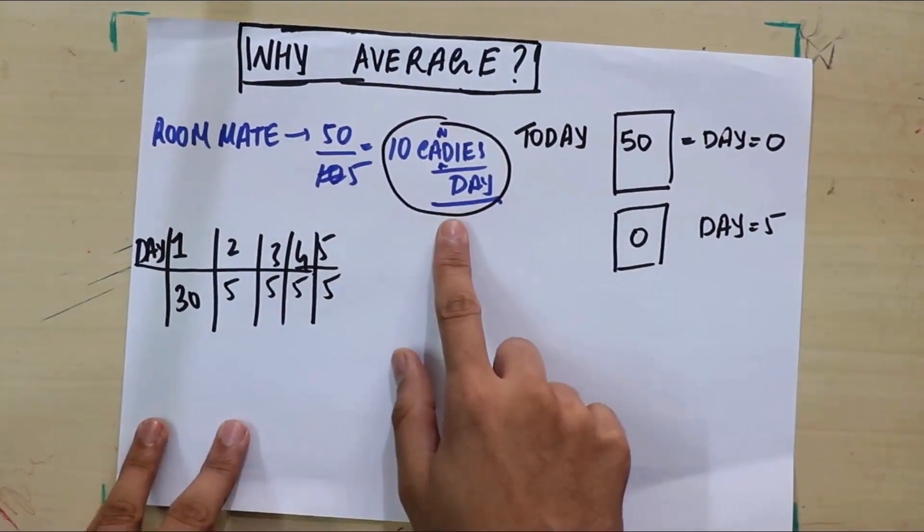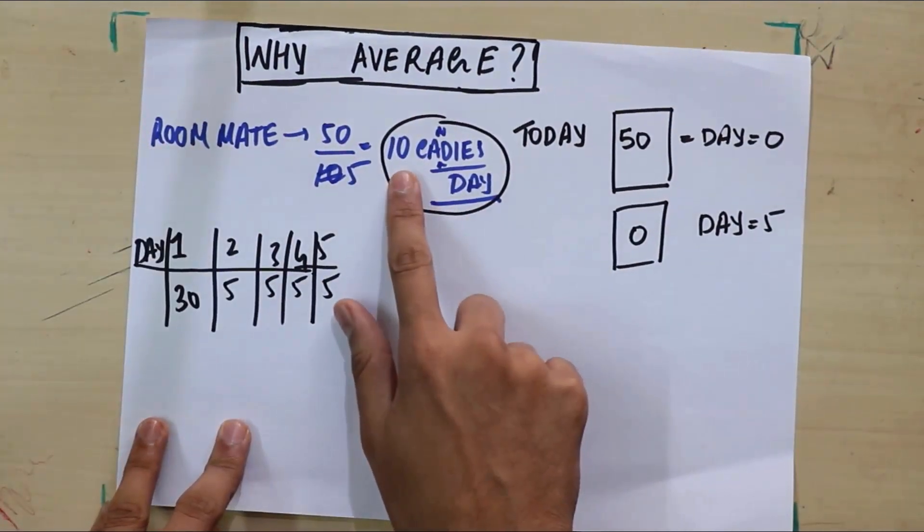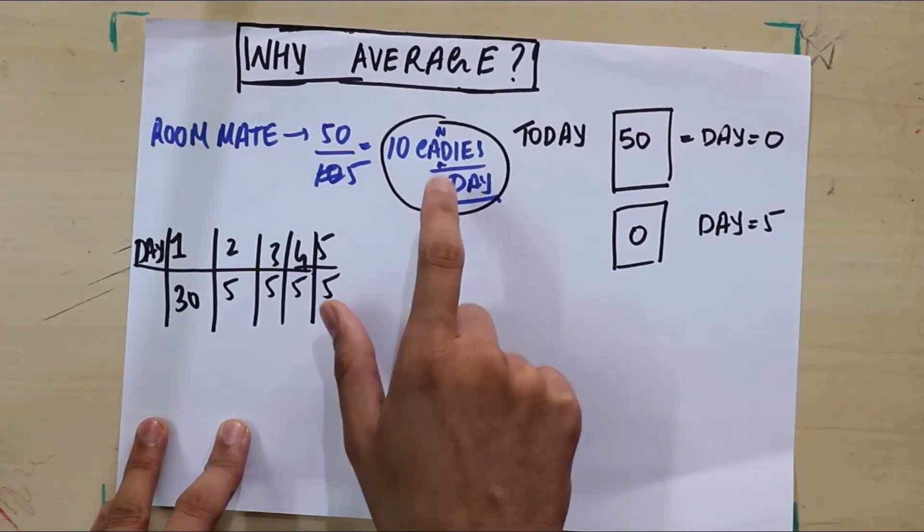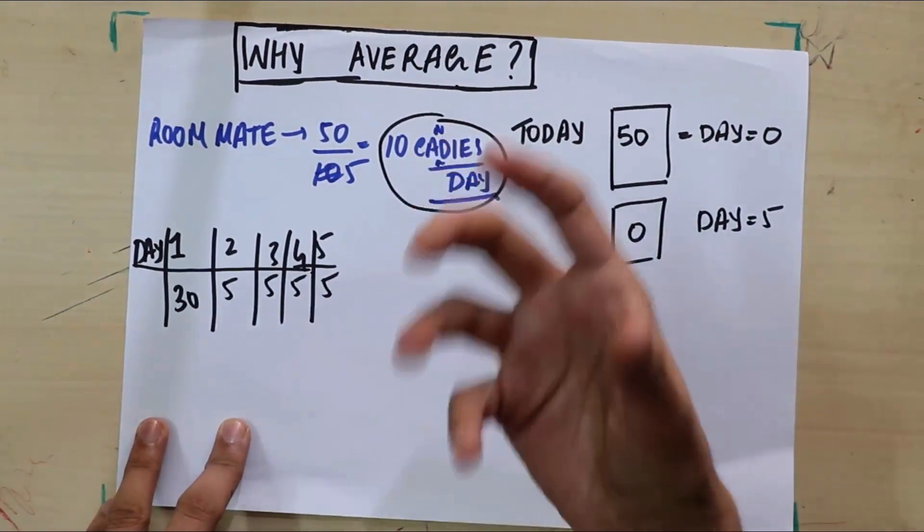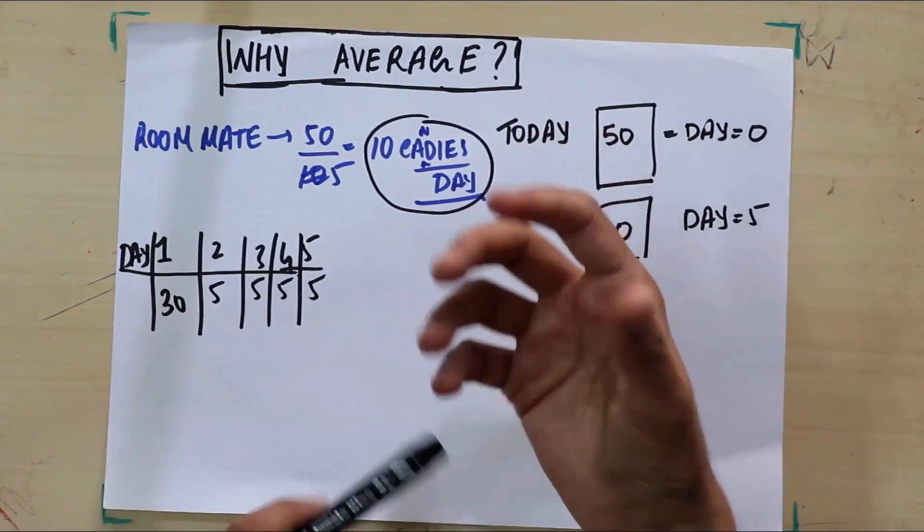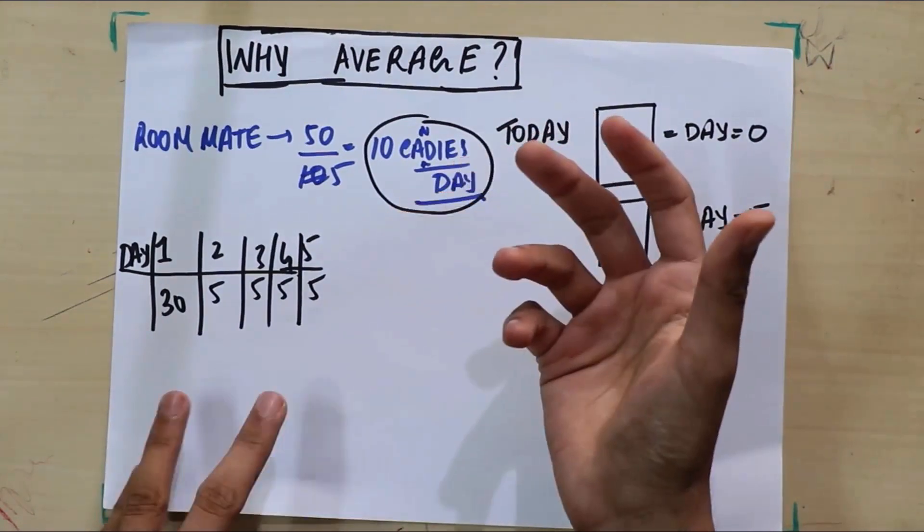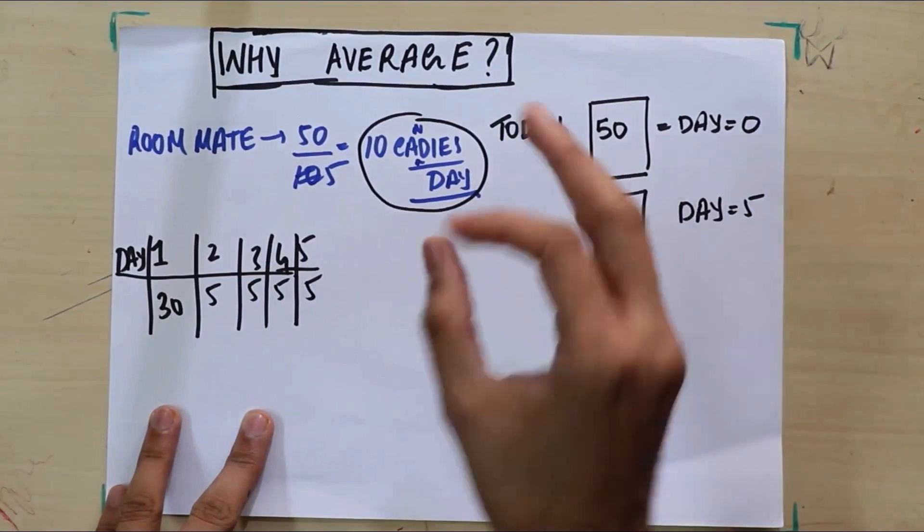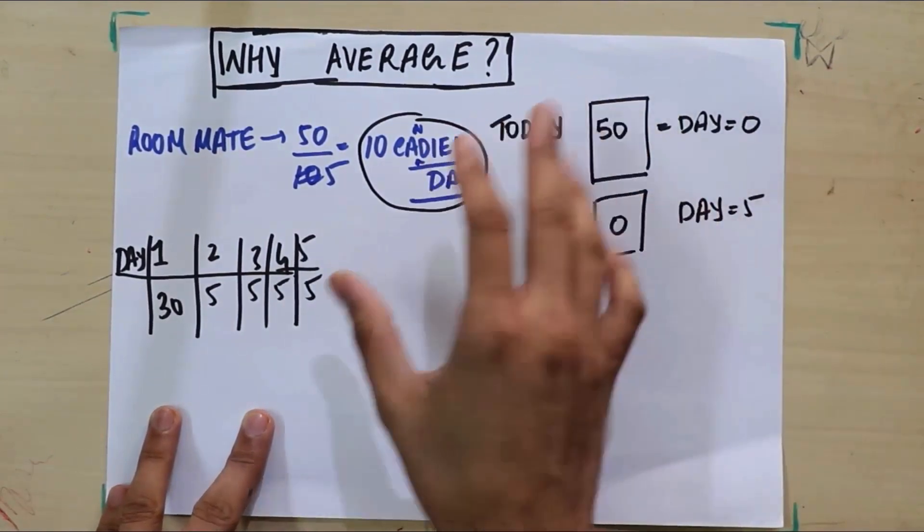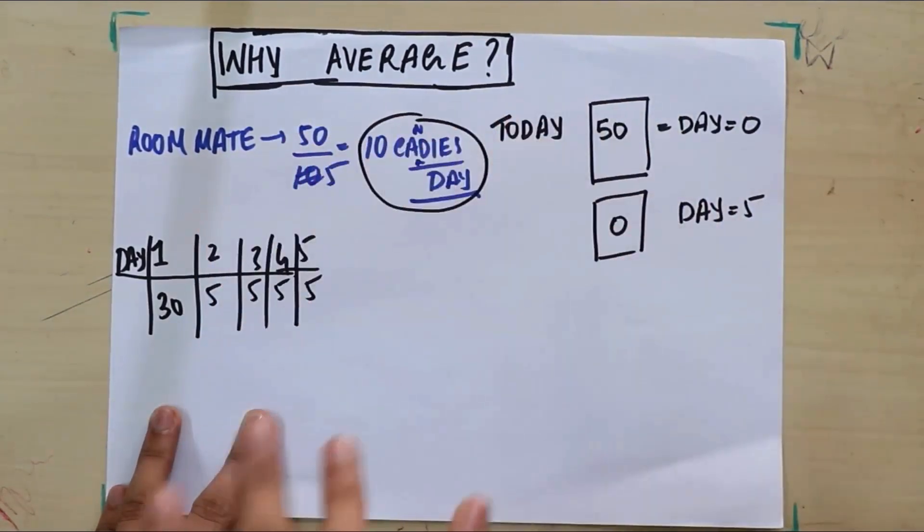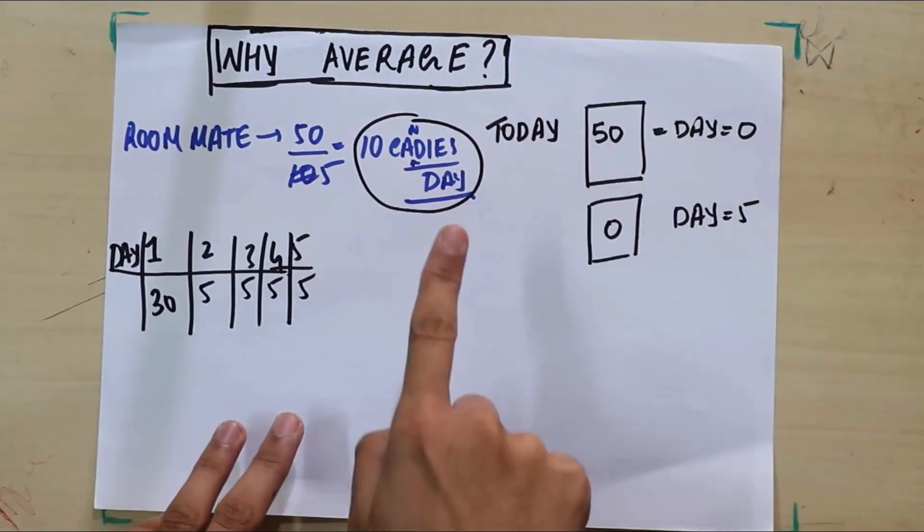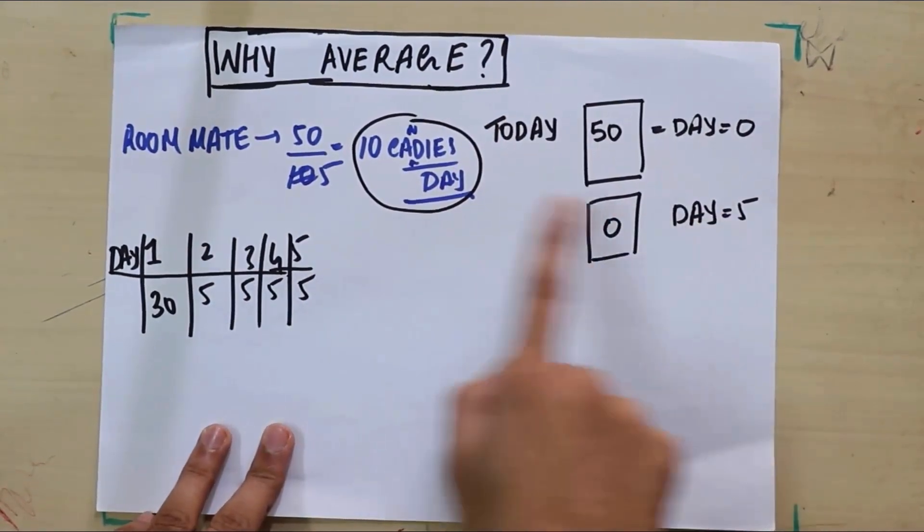Okay, so what does this number represent? He didn't really eat 10 candies per day. So this number represents an assumption that we made. If we make an intrinsic assumption that he ate every single day the same number of candies, or in other words he consumed candies uniformly, then to consume 50 in five days he'll have to consume at this rate. Are you following me?